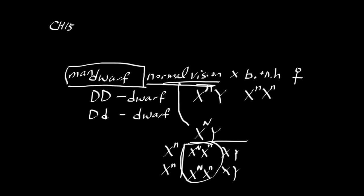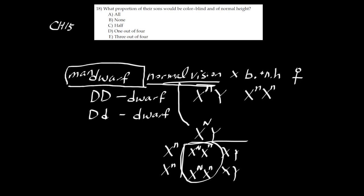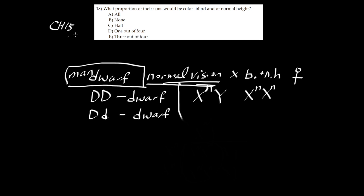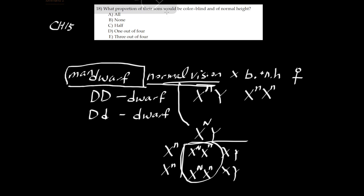Number 18 asks what proportion of their sons would be colorblind. For sons (XY): they get X-little-n from mom and Y from dad, so all sons have little n — which means all sons are colorblind. So 100% of their sons will be colorblind.